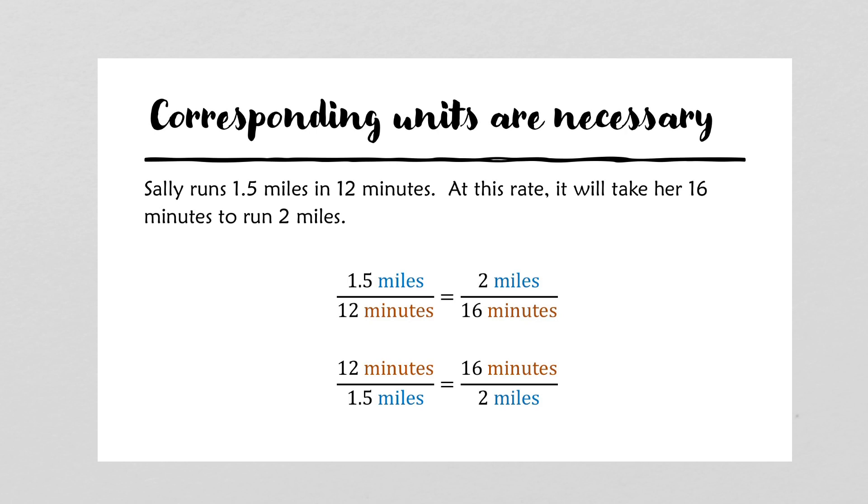In this problem, we note that Sally runs 1.5 miles in 12 minutes. That's a relationship between miles and minutes. At this rate, Sally will also run 2 miles in 16 minutes. We look and compare how we put 16, 2, 1.5, and 12 into the proportion.